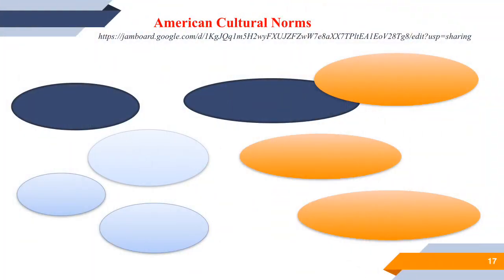Another difference noticed while living outside the United States is that in other countries, tax is included in the displayed price when making a purchase. In Europe, if a mouse was priced at $25, you knew it would be $25. After viewing the video about American cultural norms, students should use the provided link to discuss it and fill in the jam board.